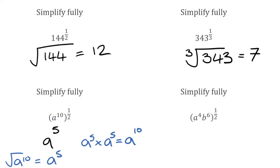For the next example, we have a to the power of four times b to the power of six, all raised to the power of a half. We apply our laws of indices to each term. For a: four times a half is two, giving a squared. For b: six times a half is three, giving b cubed.